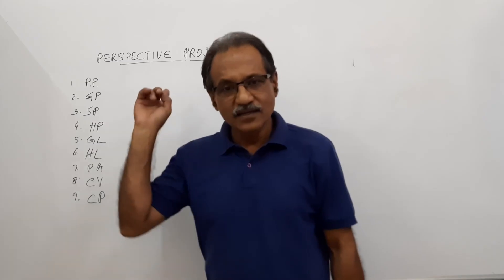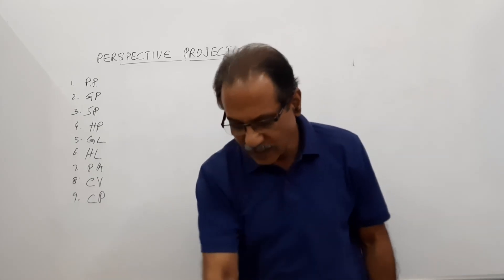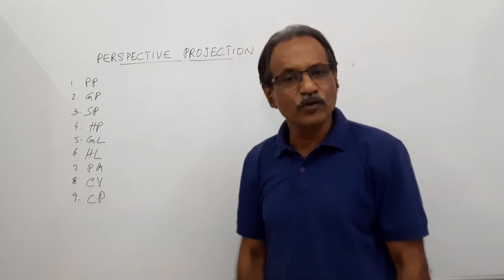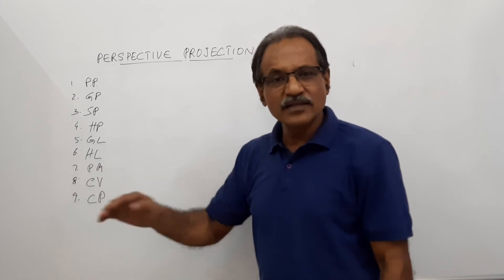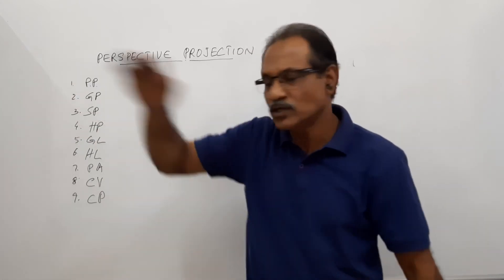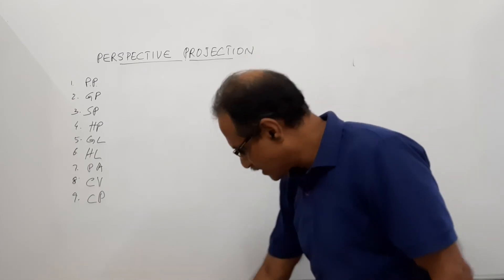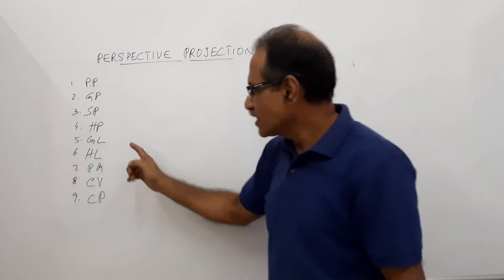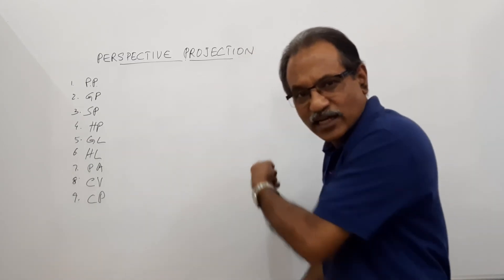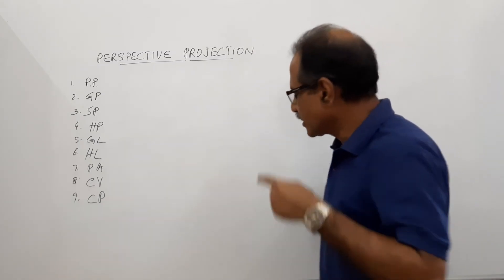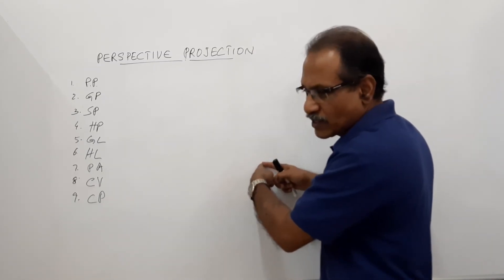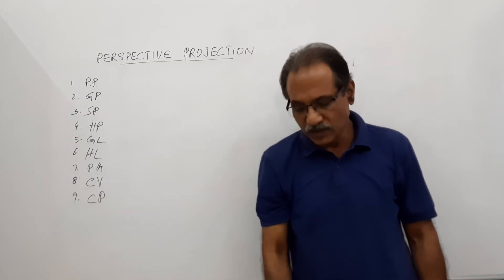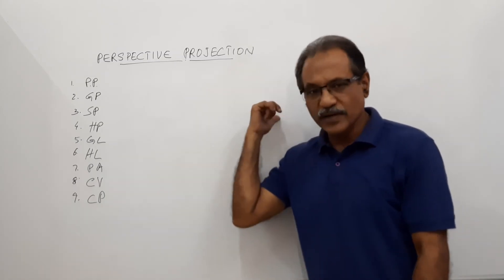To recap: picture plane — this wall can be assumed as the picture plane. Ground plane — this floor is the ground plane. Station point — the location of the eye of the observer. Horizon plane — passes through the eye parallel to the ground. Ground line — where ground plane meets picture plane. Horizon line — where horizon plane meets picture plane. Perpendicular axis — ray from the eye perpendicular to PP. Center of vision — where perpendicular axis meets PP. Central plane — contains center of vision, perpendicular axis, and the eye, perpendicular to ground and PP.